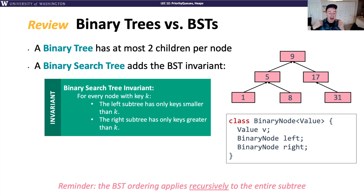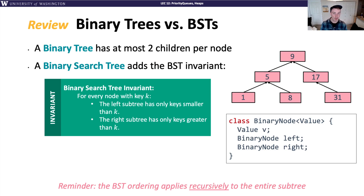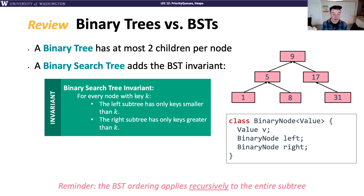We added an invariant called the binary search tree invariant, which made it a binary search tree. This requires a sorted property: for every node with key k, the left subtree only has keys smaller than k, and the right subtree has keys greater than k. So it added this sortedness property to our binary tree.